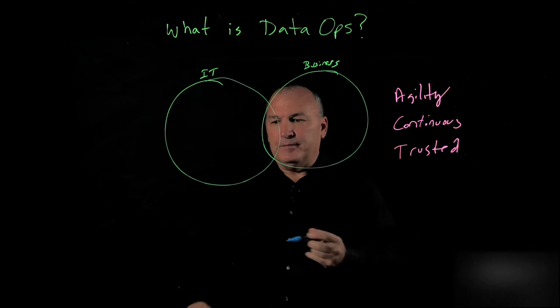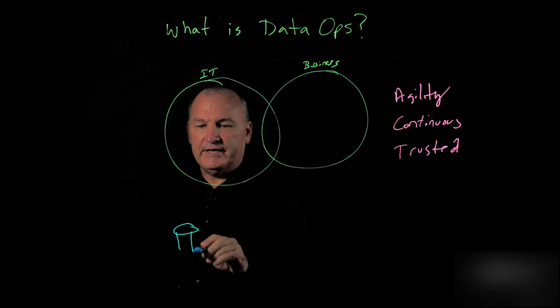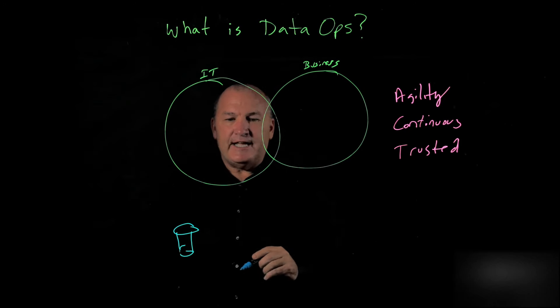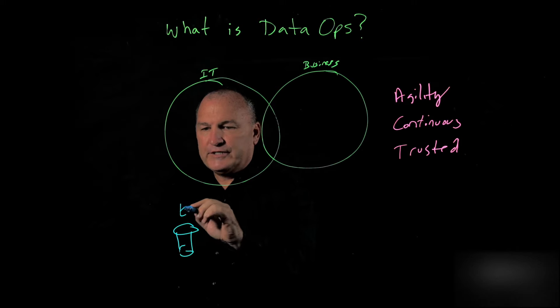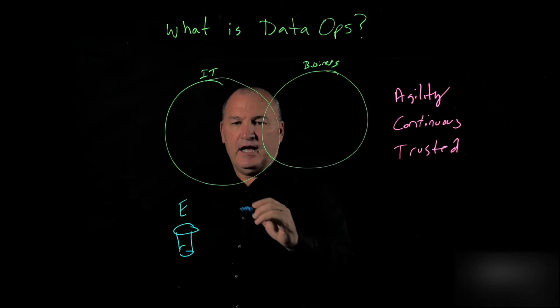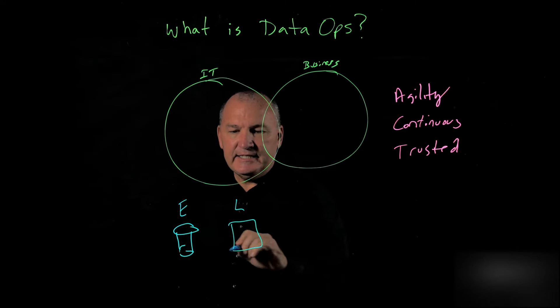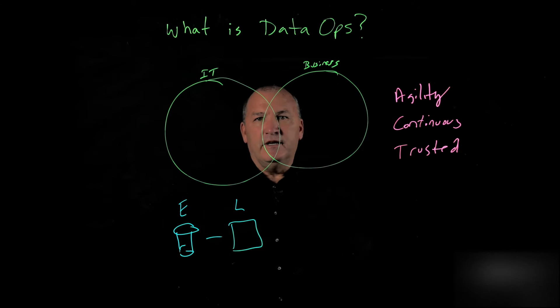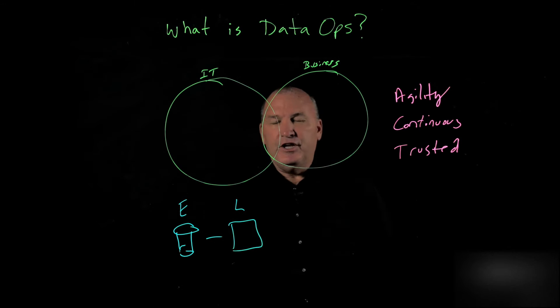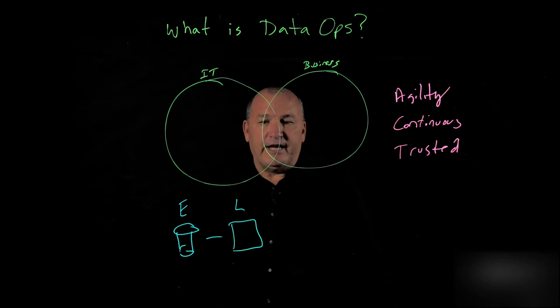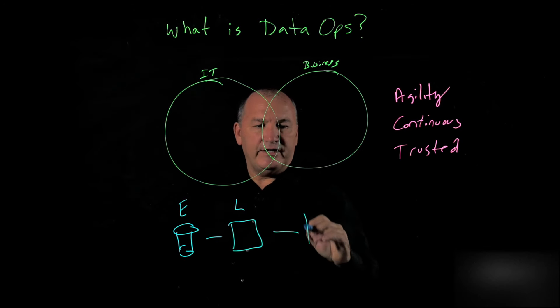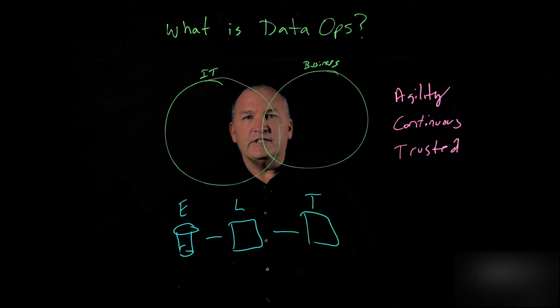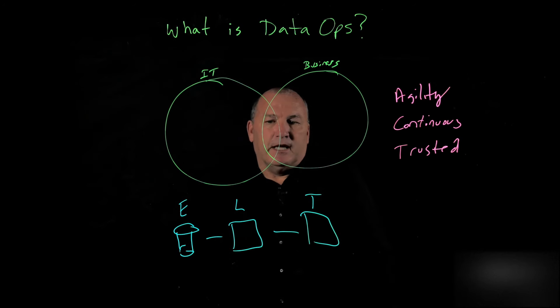And this is where data pipelines come in. So a data pipeline, I've got different disparate data sets. I want to extract data from that. I want to load that data into a repository, maybe a warehouse, maybe a lake. You may have other data architectures. You may load that directly into memory for analytics. And then you've got a transform. So this is a modern approach to building data pipelines.